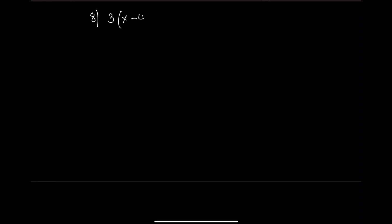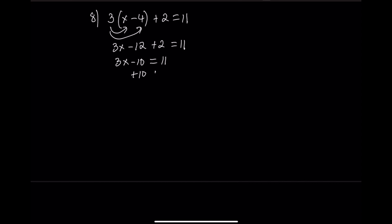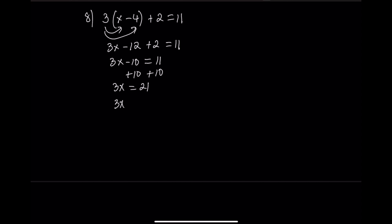Equation 8: 3 times the quantity x minus 4 plus 2 equals 11. Step 1: distribute — 3 times x minus 3 times 4 — which gives 3x minus 12. Now 3x minus 12 plus 2 equals 11, which simplifies to 3x minus 10 equals 11. Step 3: add 10 to both sides — 3x equals 21. Step 4: divide by 3 — x equals 7.